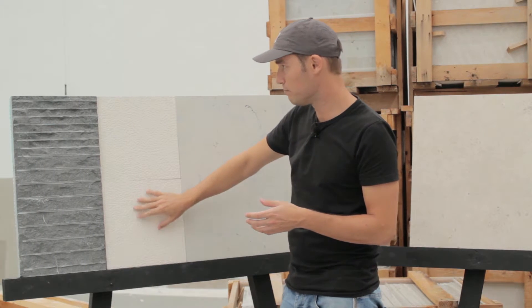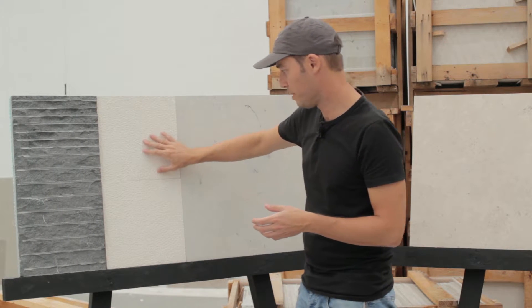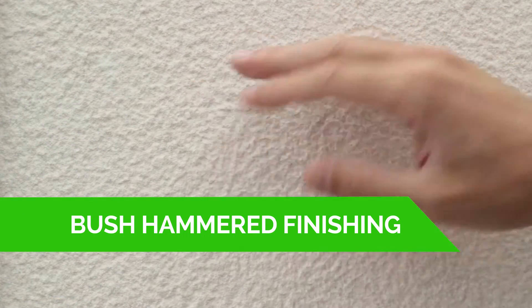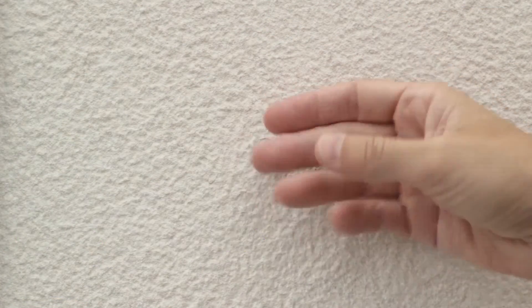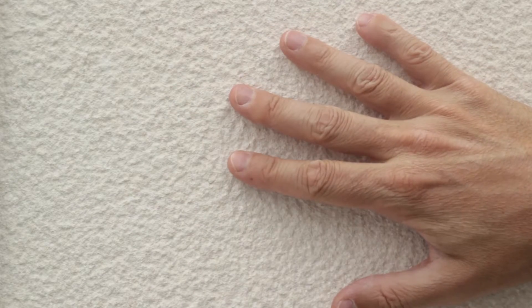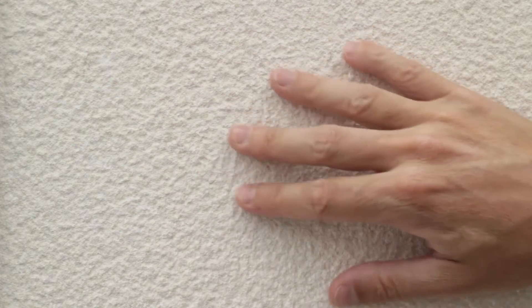This one here is a bush hammered surface. So we have two small samples that show more or less the elements of the stone. Not so much. It's quite white. It's a bit rough, but very uniform.